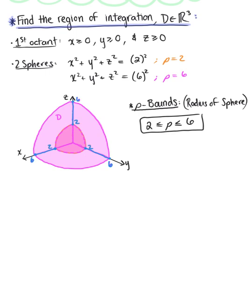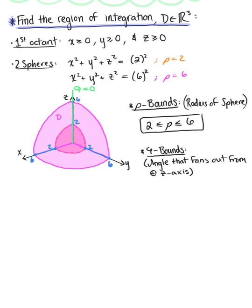Next, we want to think about the phi bounds. Phi is the angle that fans out from the positive z-axis. Looking at our sketch, the positive z-axis is the ray where φ = 0. Phi fans out from the positive z-axis and stops at the x-y plane because the solid is restricted to the first octant. The second ray for phi runs along the y-axis, creating a right angle, so φ = π/2. Therefore, 0 ≤ φ ≤ π/2.